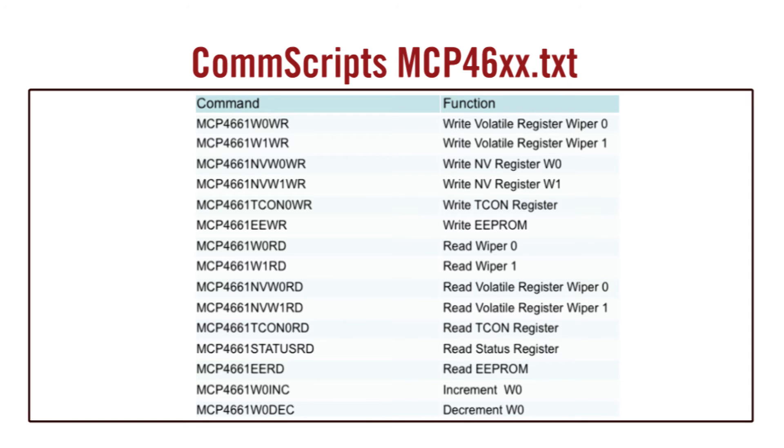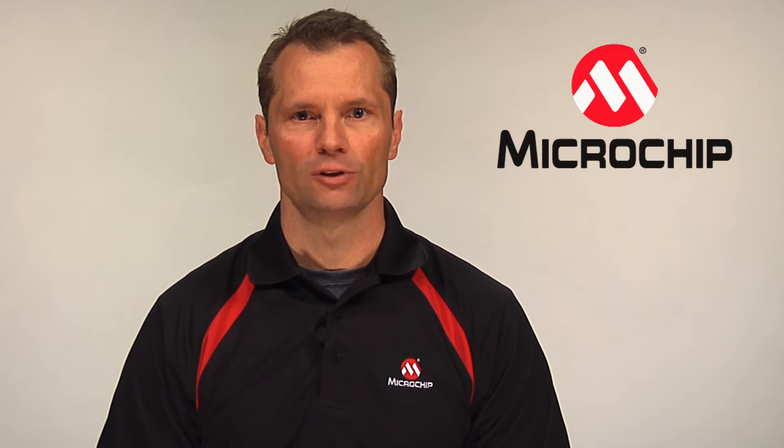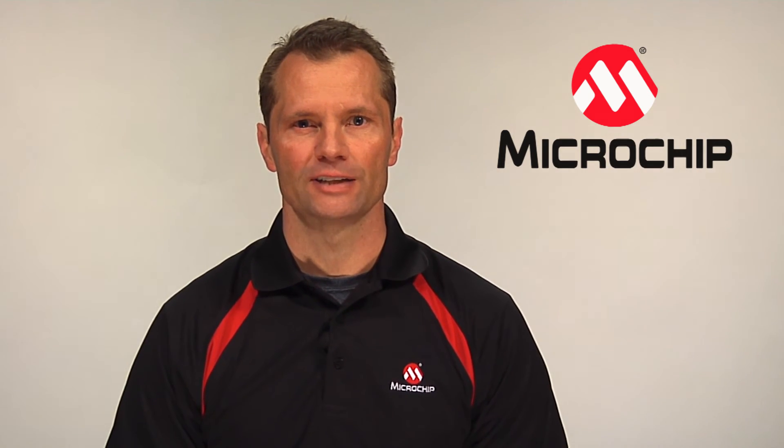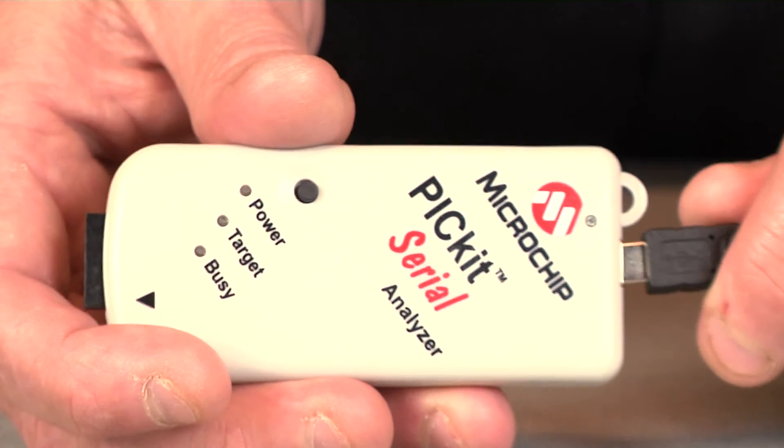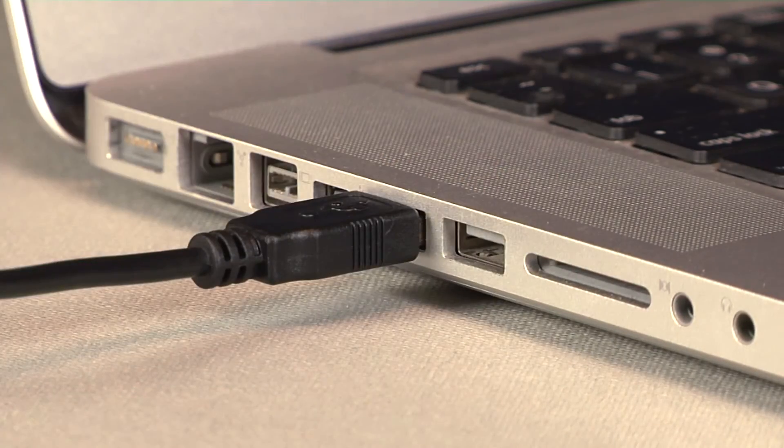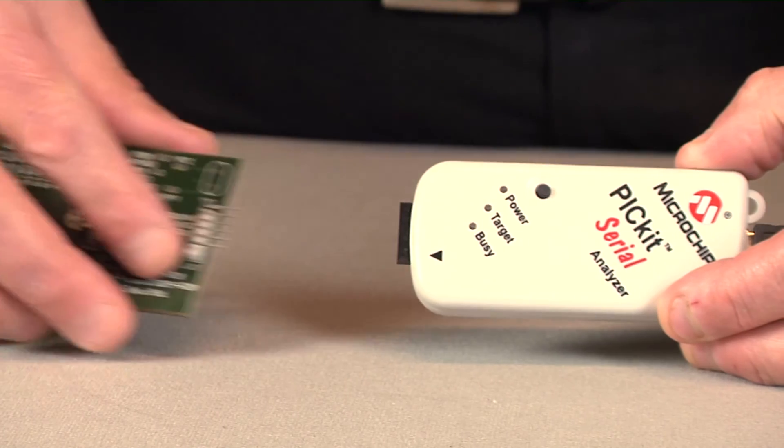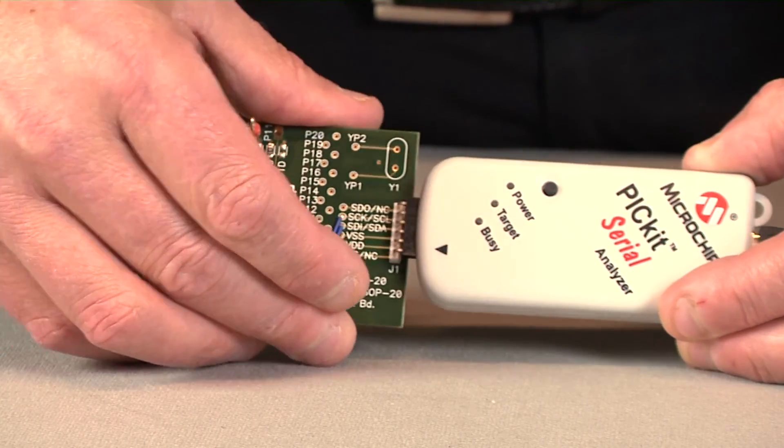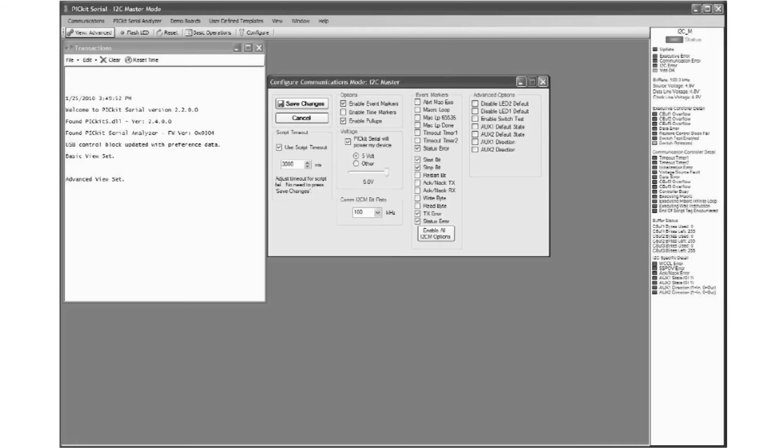Now let's run through an example of using the MCP46XX EV with the PicKit serial analyzer. Plug the PicKit serial device into the PC USB port. Plug the MCP46XX EV evaluation board into the PicKit serial. Start the PicKit serial GUI. Ensure the GUI is in I2C communications mode. Ensure that the master I2C configuration is appropriately configured.